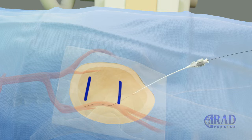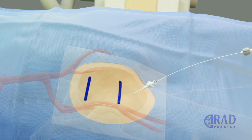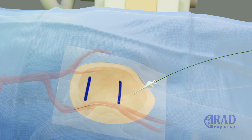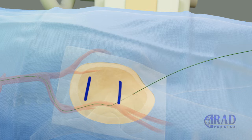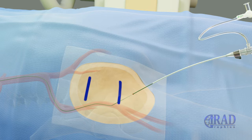The transitional sheath is advanced over the microwire. The microwire and inner dilator of the transitional sheath are exchanged for a wire with larger diameter and longer length, which is advanced through the transitional sheath into the aorta. Then, the outer layer of the transitional sheath is exchanged for a vascular sheath.